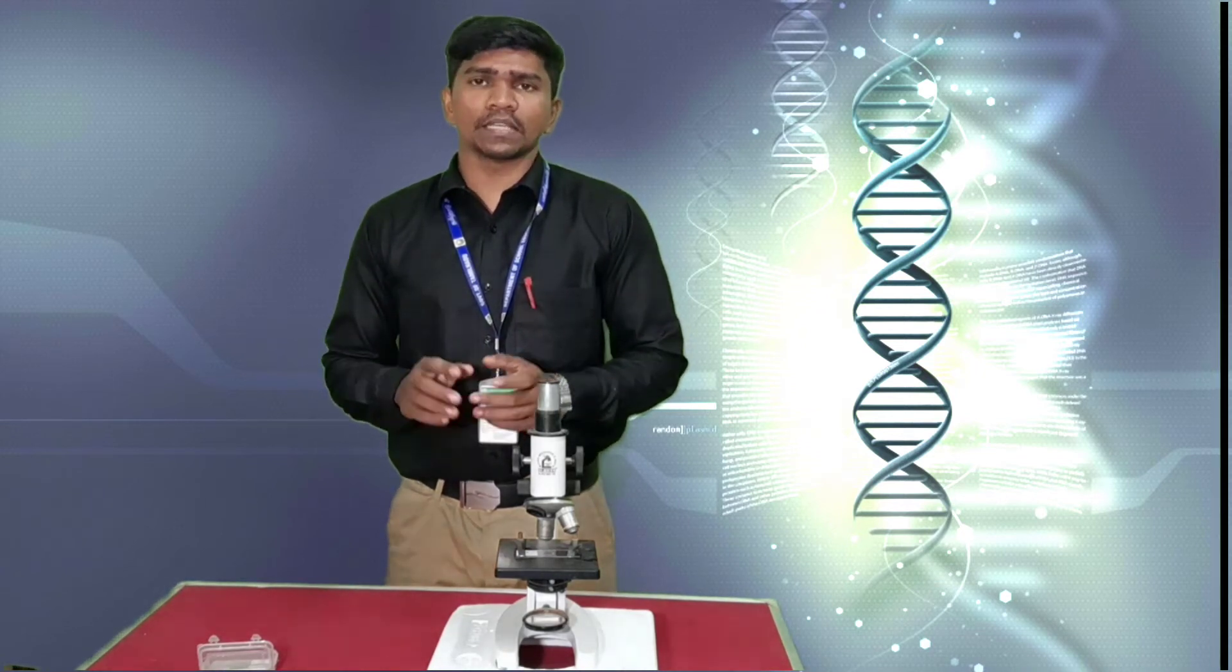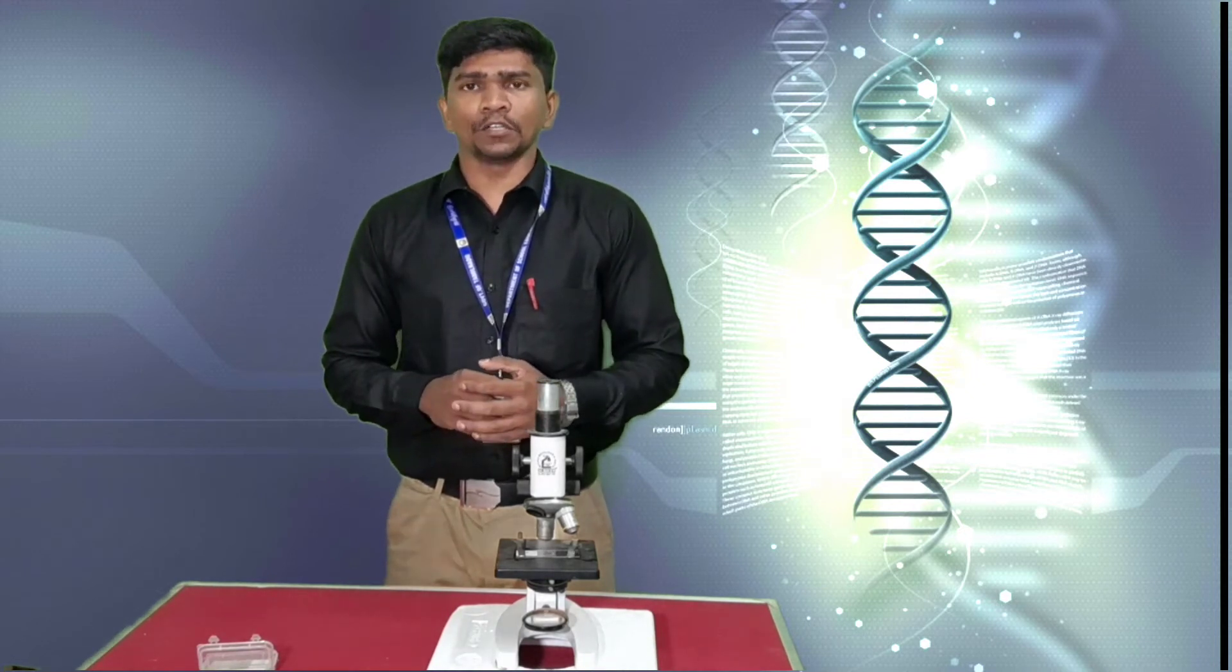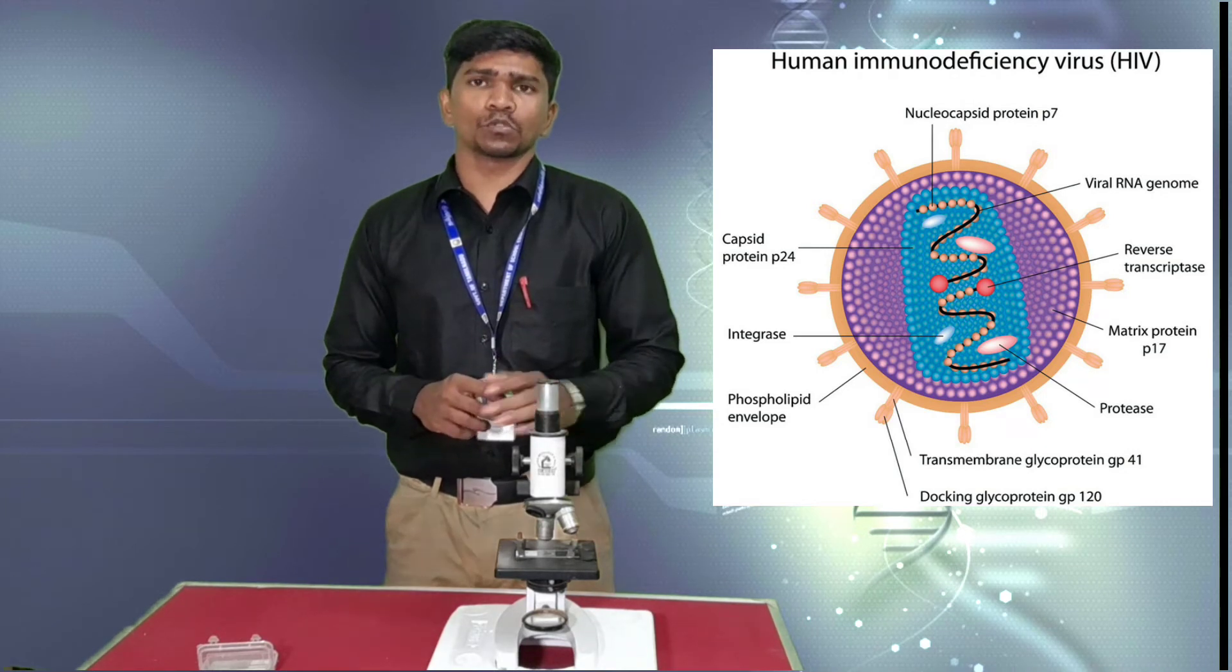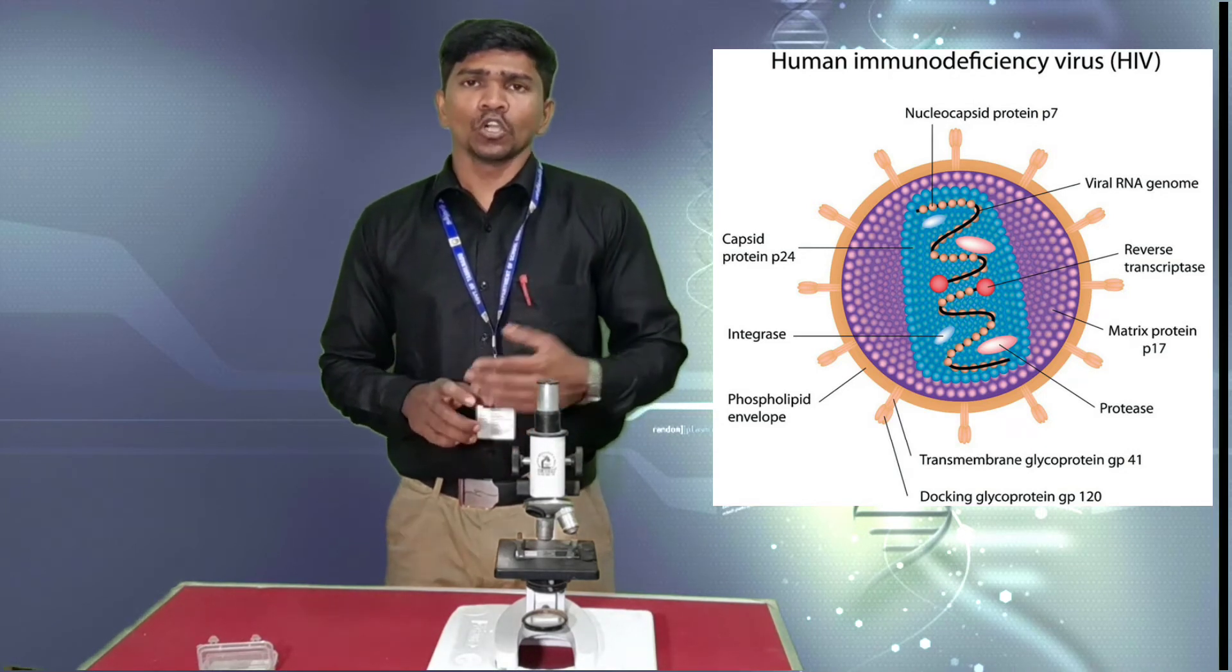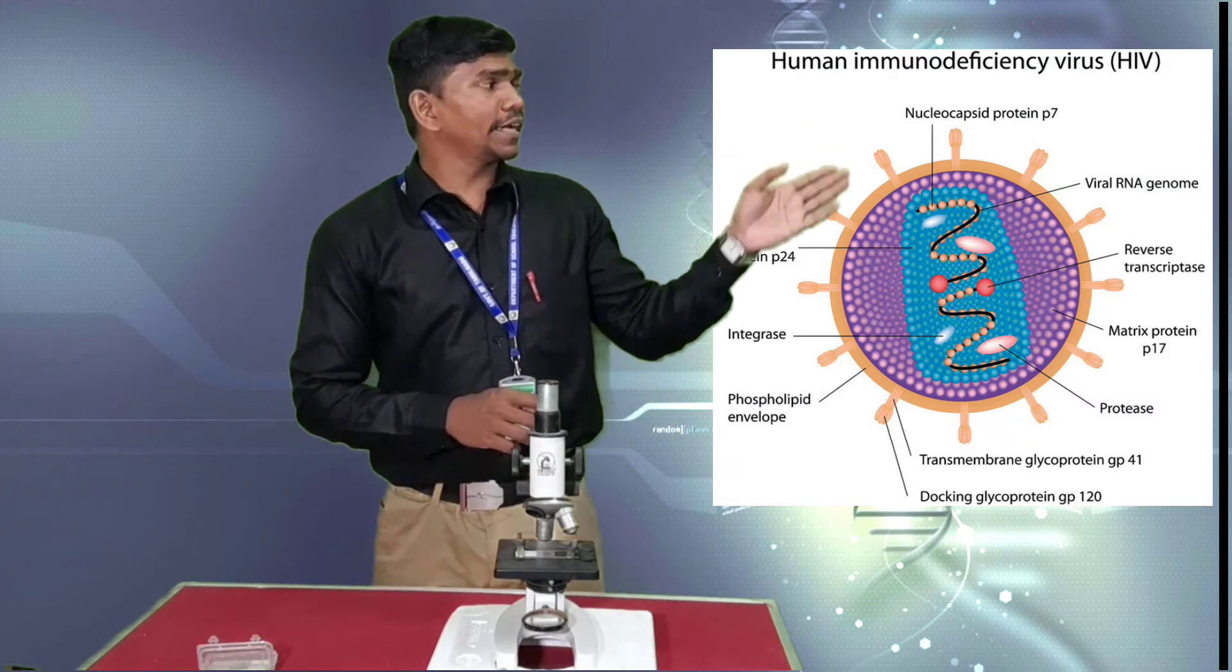The last one what we are going to see is adenovirus, that is HIV, which we cannot see with the help of compound microscope. We can see only by means of electron microscope. So you can get a specimen copy of photograph like this. You can easily identify.